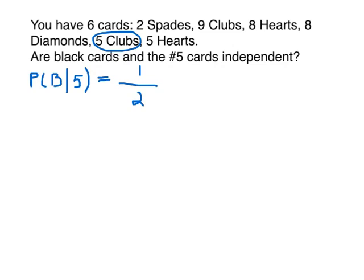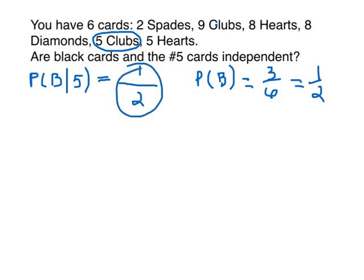Does it equal the probability without the condition? The probability without the condition is the probability of just getting black cards. How many black cards are there? Three, out of a grand total of six cards. Three-sixths is one-half. All you have to do is compare the two probabilities — are they the same? Yes. Since they're equal, the two events are independent.